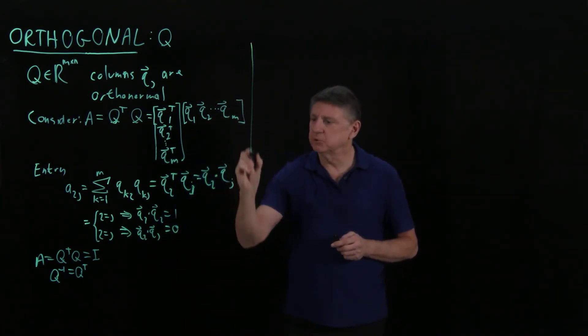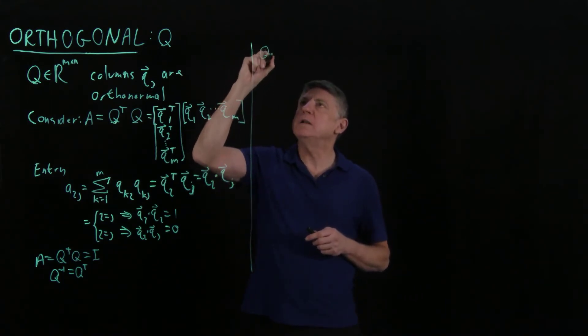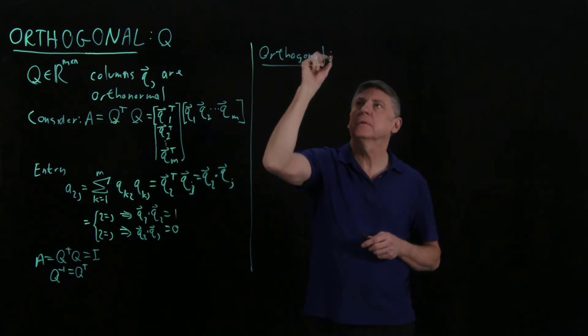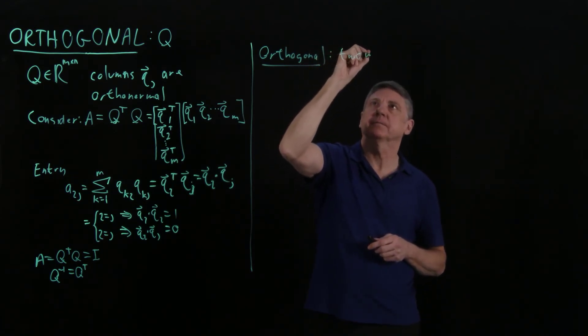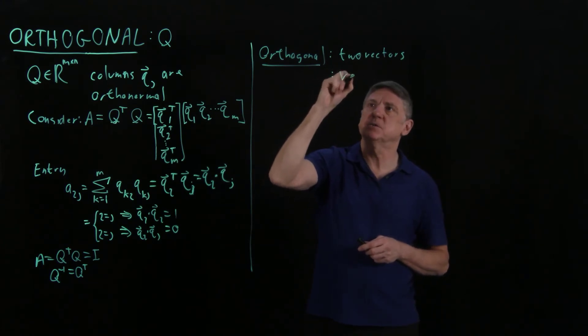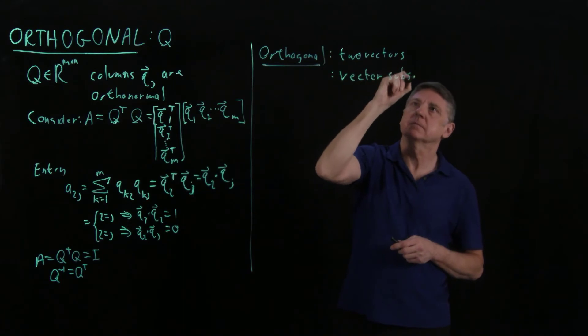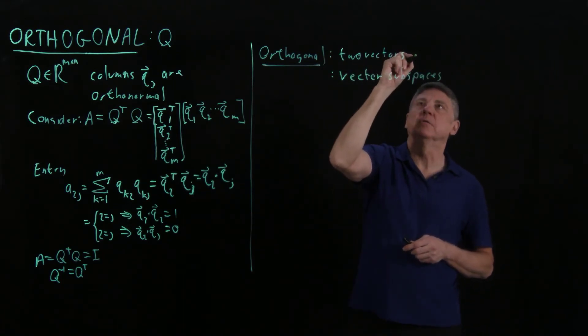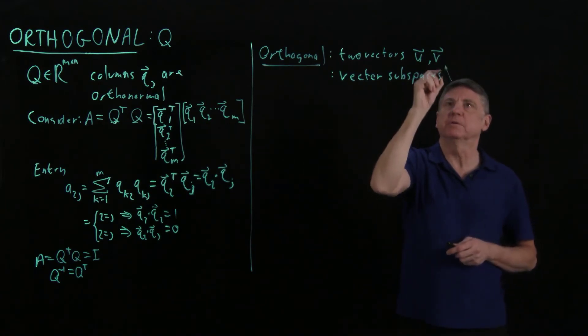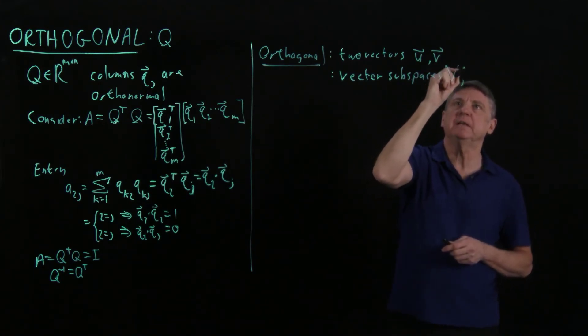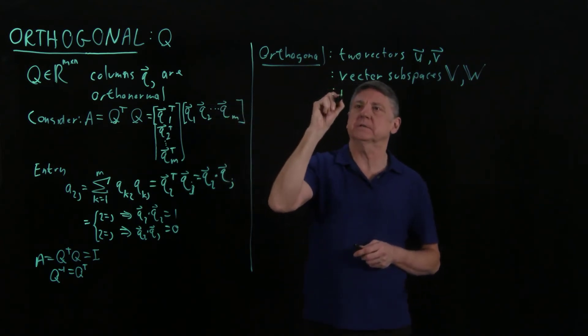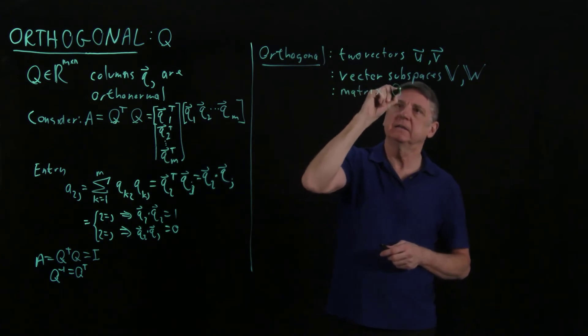Let's make some terminology observations. What does orthogonal mean to us? Well, orthogonal can be two vectors. Orthogonal could mean vector subspaces. So when we say two vectors, we could refer to these as u and v. Vector subspaces, we could refer to these as, for example, double-barreled v and double-barreled w. And now orthogonal also means a matrix, and this is written as Q.